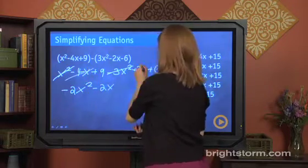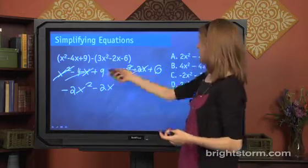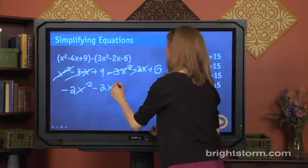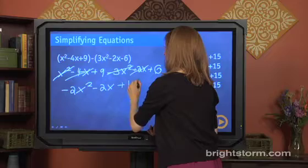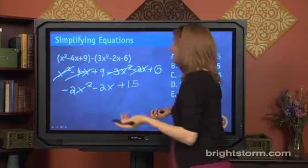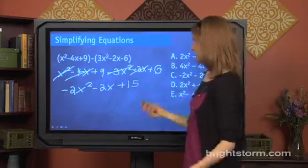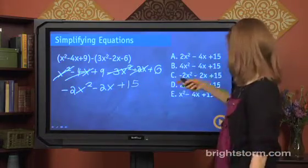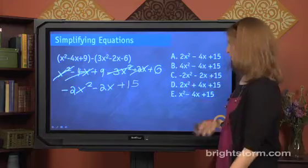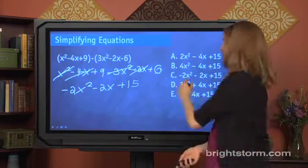And we can cross these out too. Last, 9 plus 6, just 15. And we've got it. We've just simplified these expressions. Perfect. So, which of these answer choices matches this? We need negative 2x² minus 2x plus 15. And C is the correct answer choice here.